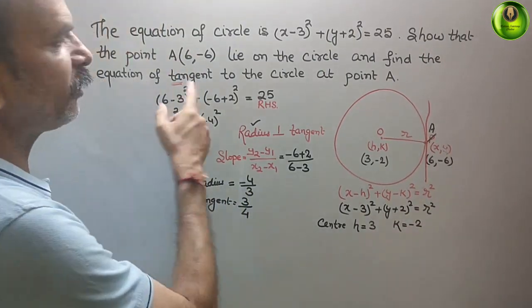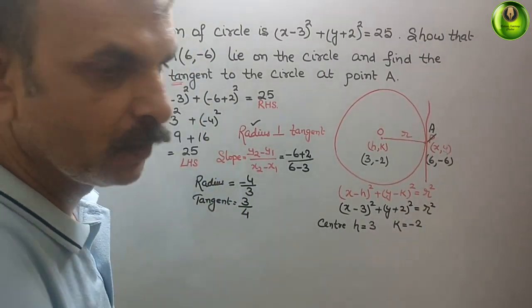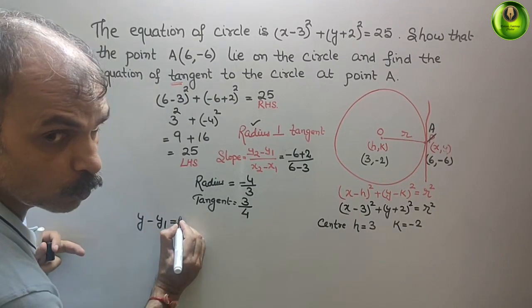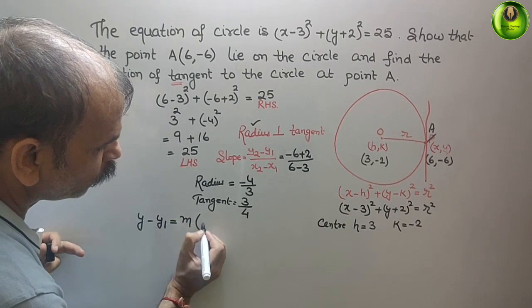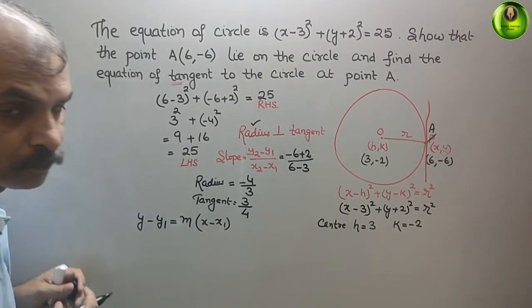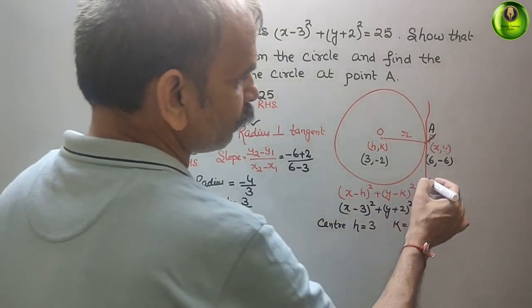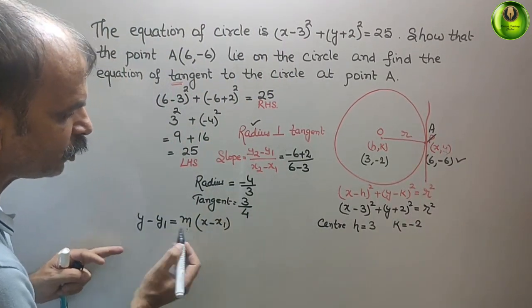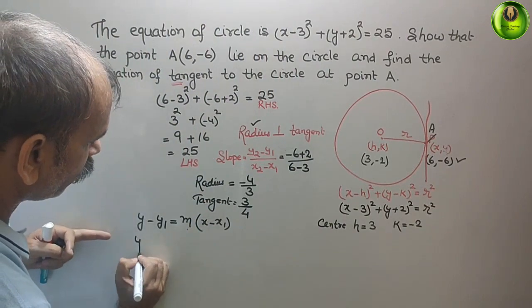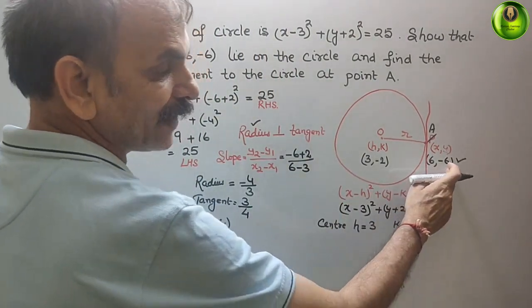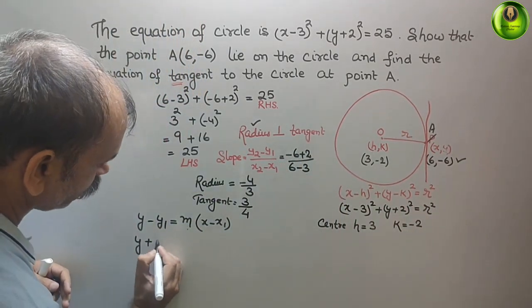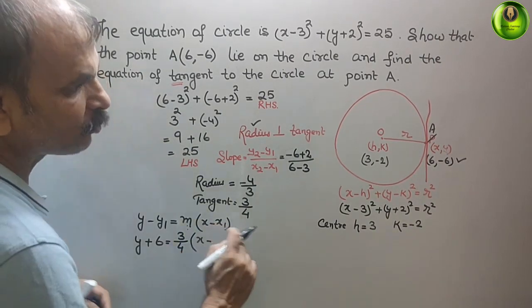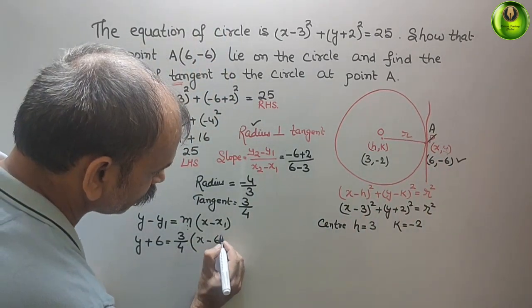Now, find the equation of the tangent. Using the point-slope form: y - y₁ = m(x - x₁). We know point A is (6, -6) and slope m = 3/4. Substituting: y - (-6) = (3/4)(x - 6), which gives y + 6 = (3/4)(x - 6).